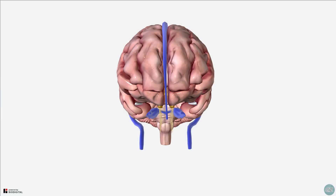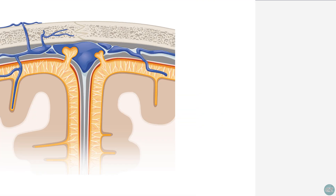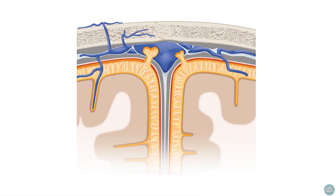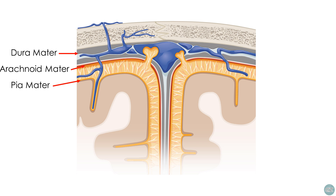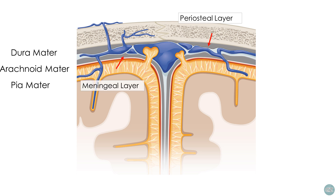The dural venous sinuses are contained between the periosteal and meningeal layers of the dura. Just to recap some points from the tutorial on the meninges of the brain, there are three meningeal layers: the outer dura mater, the inner arachnoid mater, and pia mater. The periosteal layer of the dura mater lies adjacent to the cranial bones, whereas the inner meningeal layer lies adjacent to the arachnoid mater. It is between these two layers of the outer dura mater that the venous sinuses run.